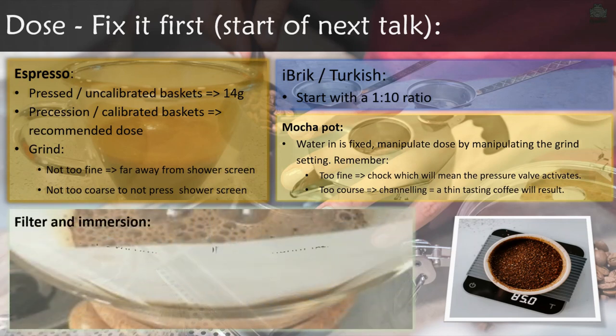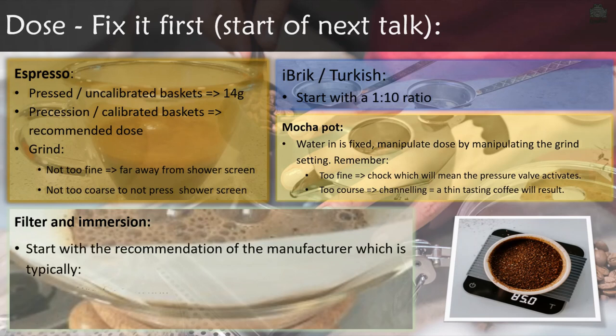For filter and immersion brews — including AeroPress — start with your manufacturer's recommendation. Typically on auto-drip coffees you're looking at 5.5 grams per 100 grams, while on steep or pour-overs you start at 6 grams per 100 grams.